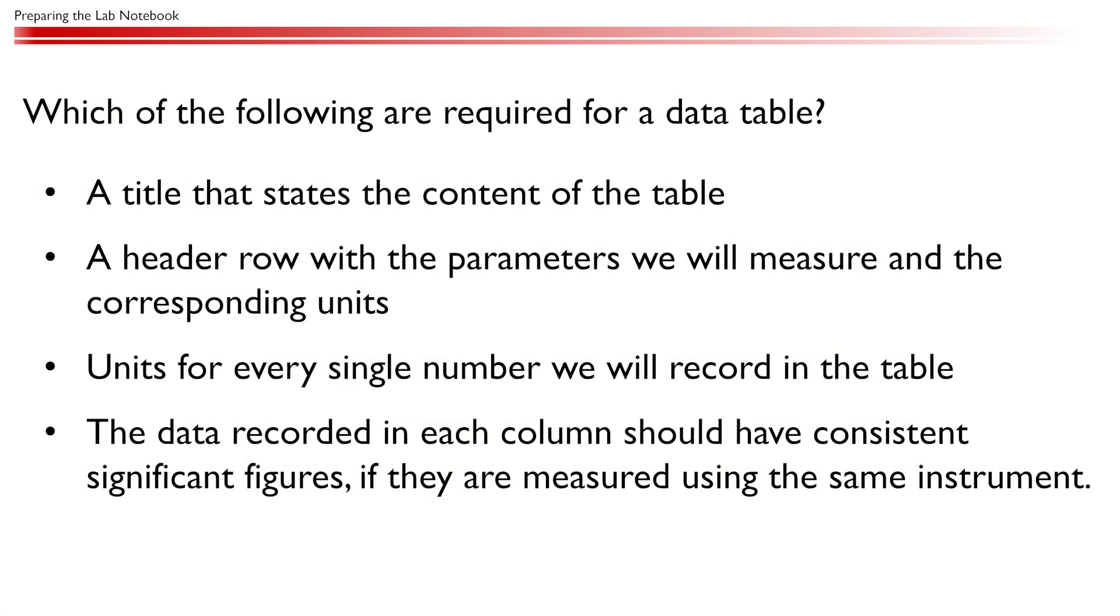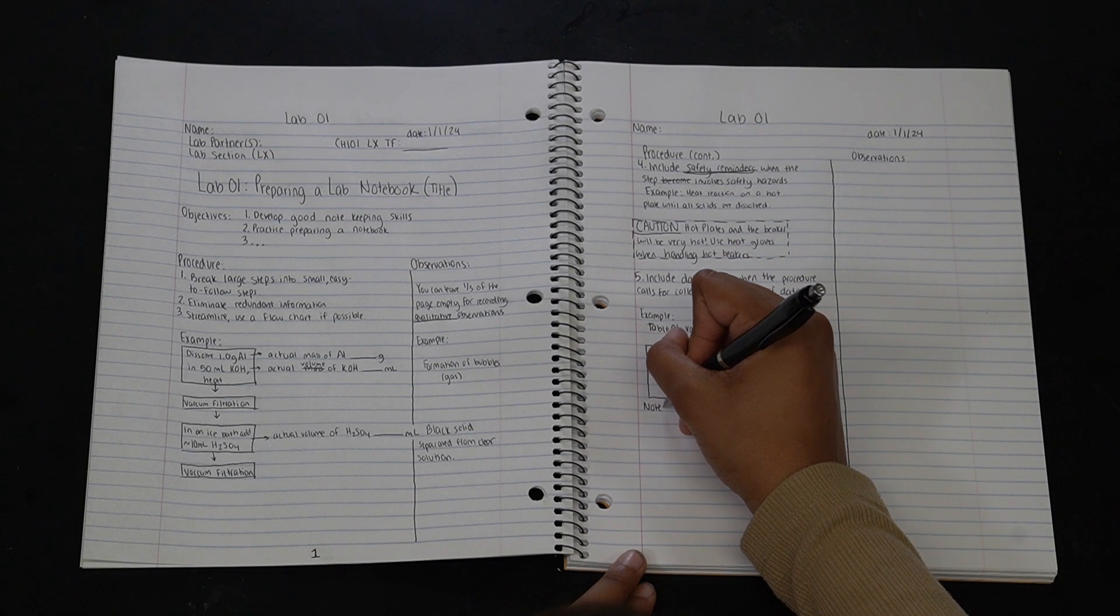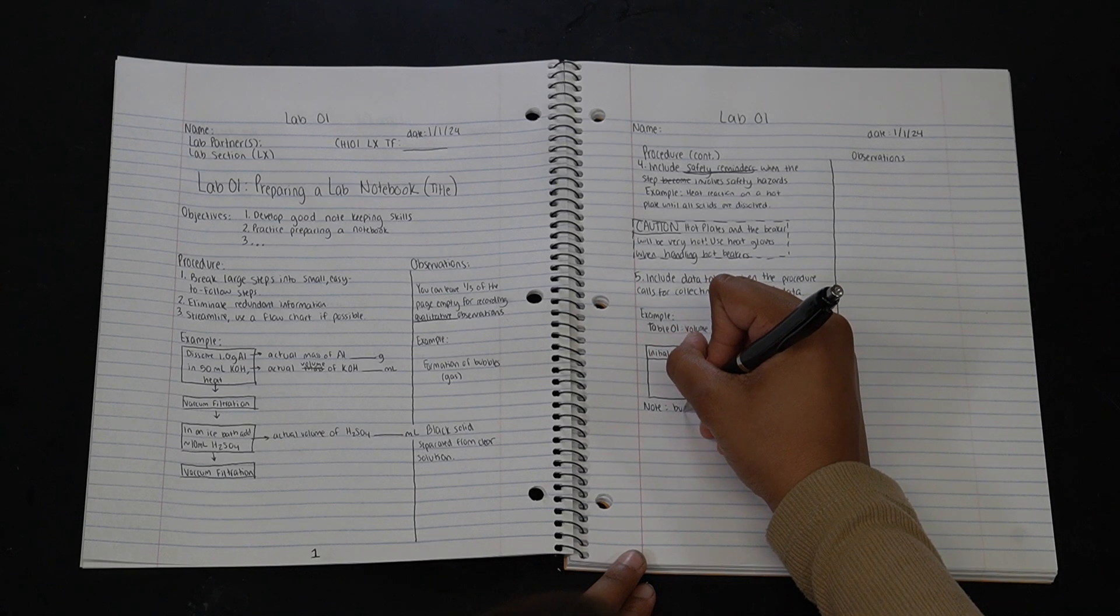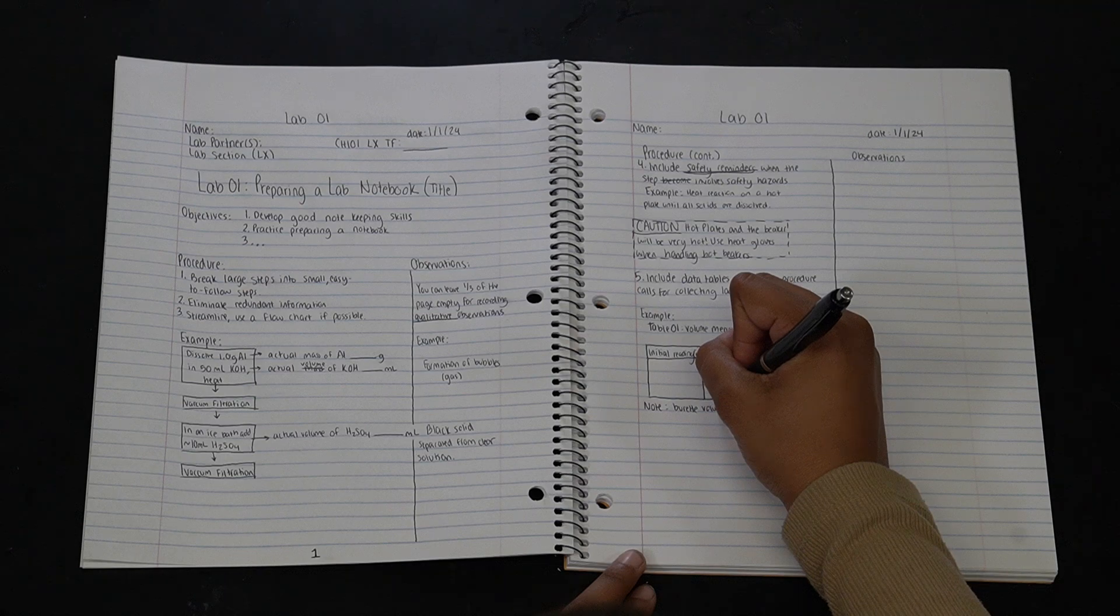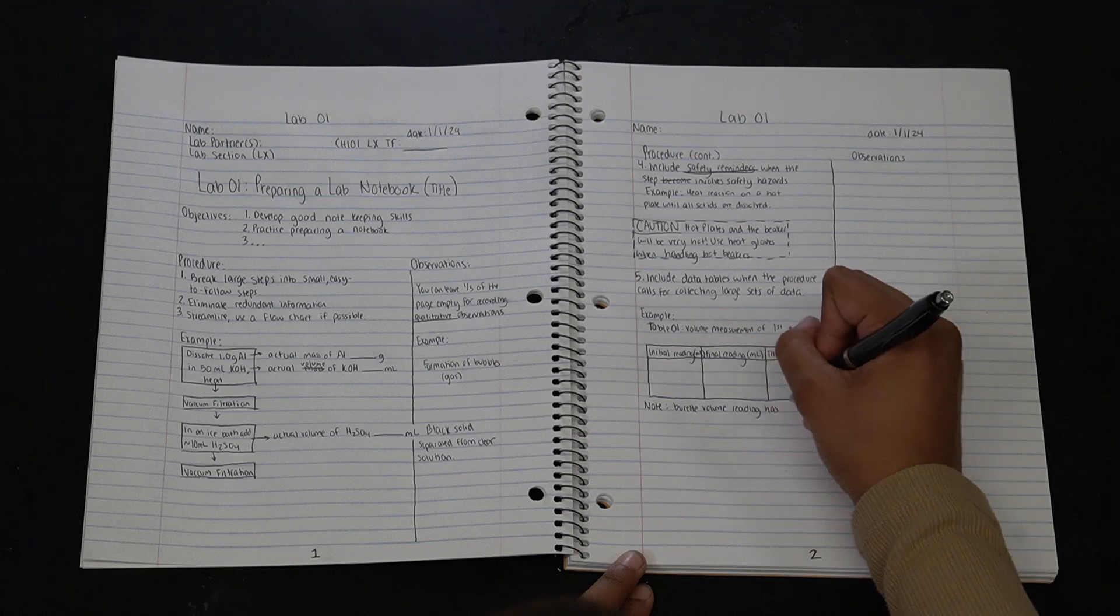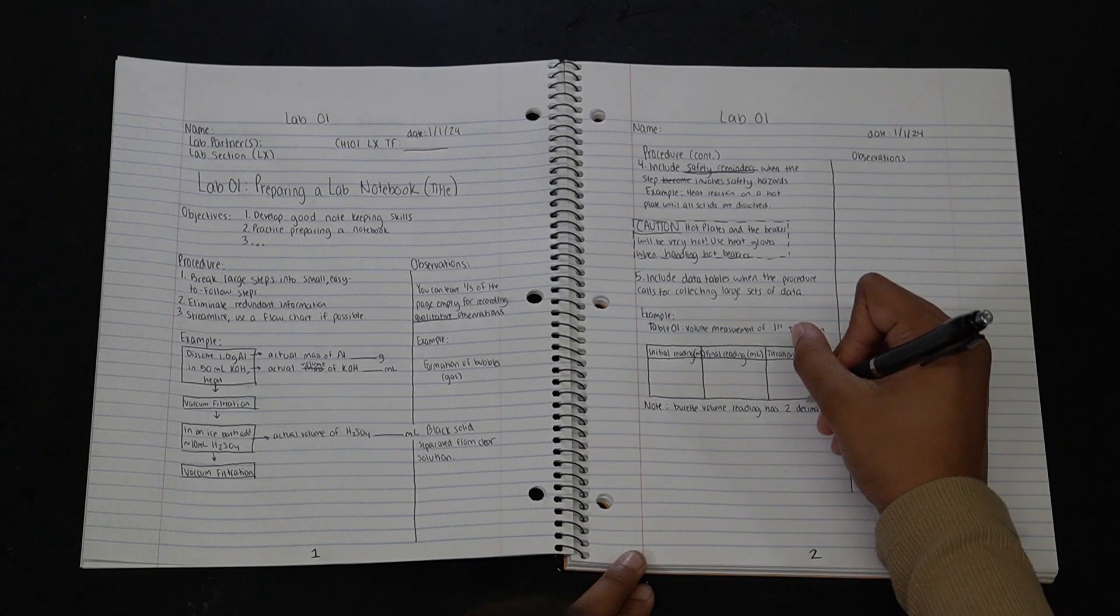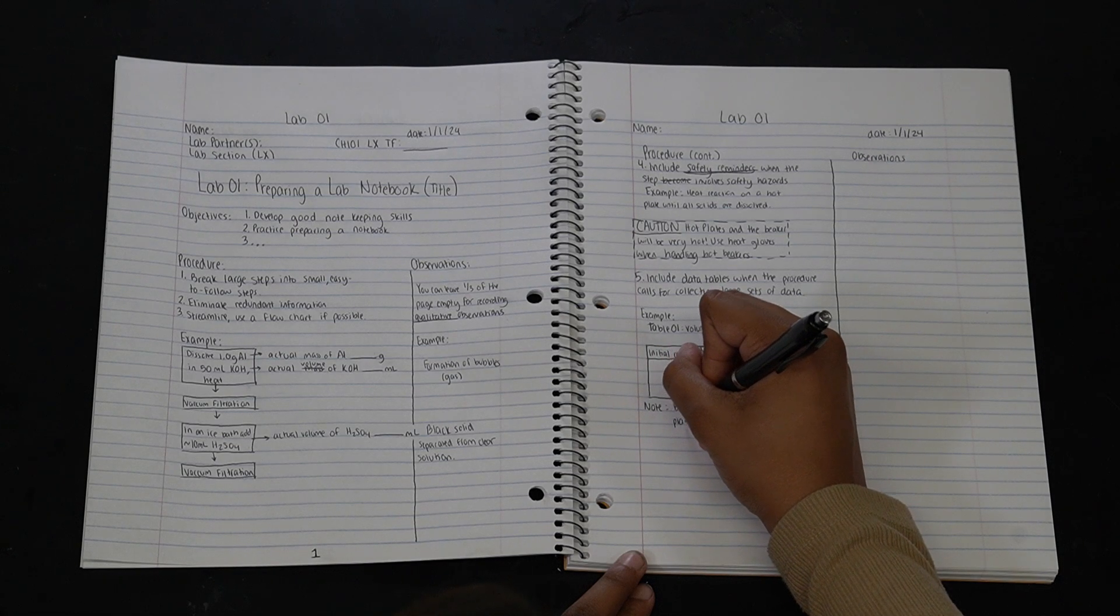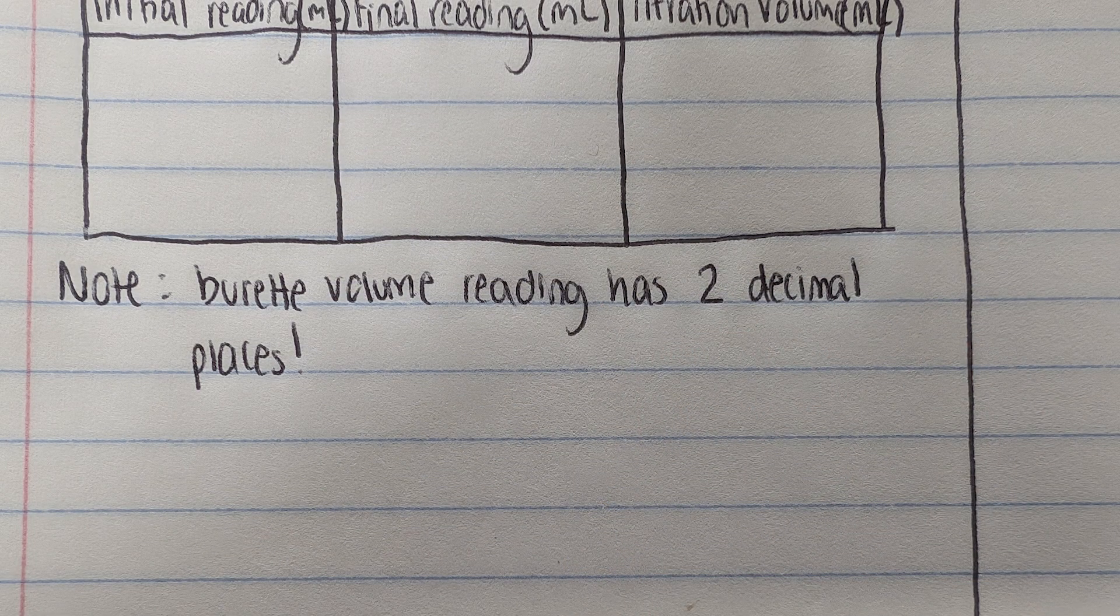Which of the following are required for a data table? In addition to preparing the data with the title and header row, it is also a good idea to think about the precision of the instrument that we will use during the experiment and the number of significant figures the measurement will have. For example, the burette is precise to 0.01 milliliter, so the readings we will record during the experiment must have two decimal places. We can keep a note in our notebook to remind ourselves.